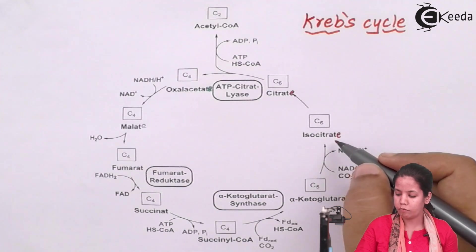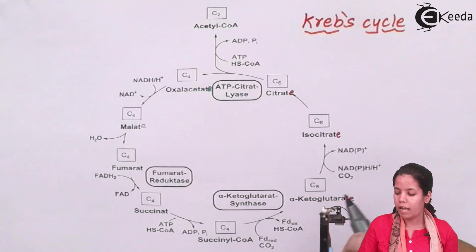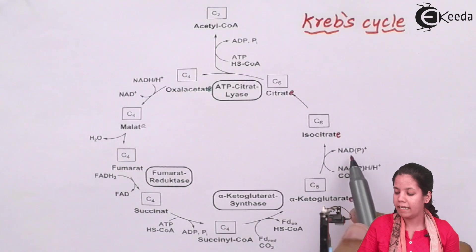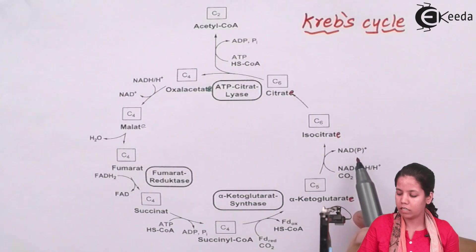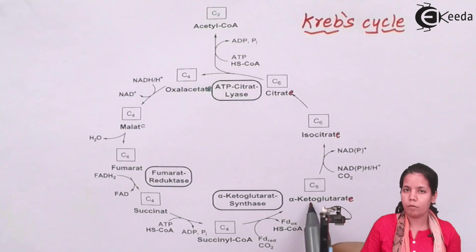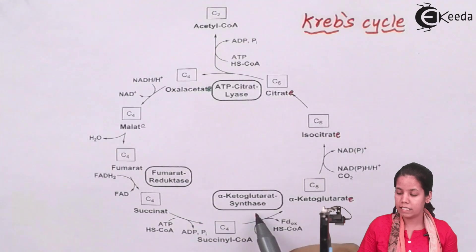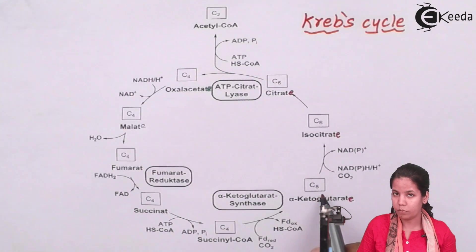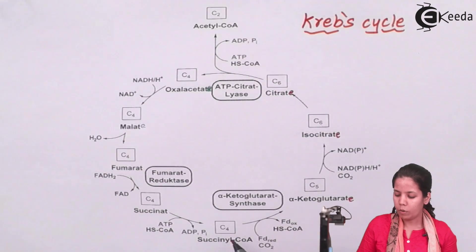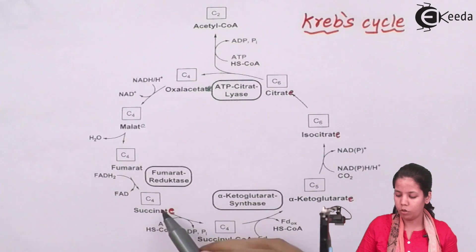The conversion of isocitrate leads to the formation of a 5-carbon molecule called alpha-ketoglutarate. During this step, a high-energy molecule — NADH (nicotinamide adenine dinucleotide) — is broken down and energy is released. The 5-carbon alpha-ketoglutarate then undergoes a reaction in the presence of alpha-ketoglutarate dehydrogenase to form succinyl-CoA, converting the 5-carbon molecule into a 4-carbon molecule.